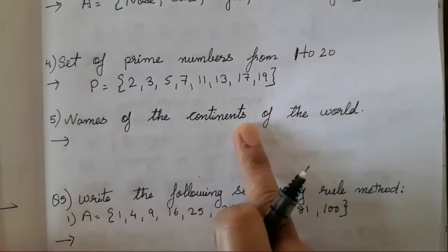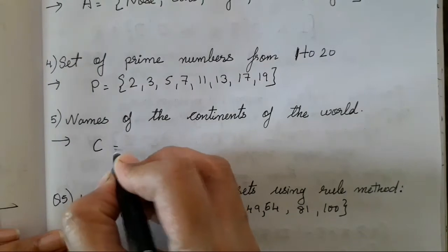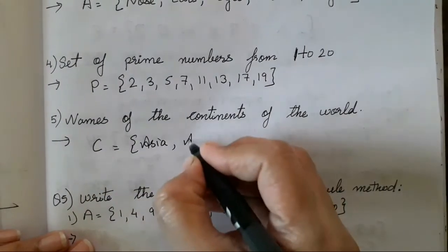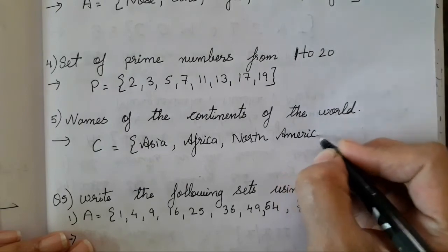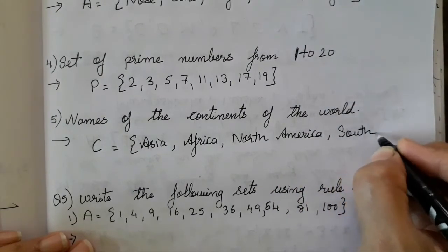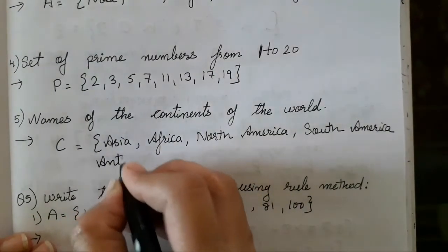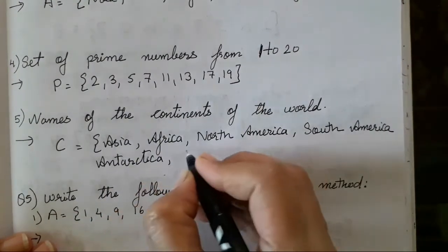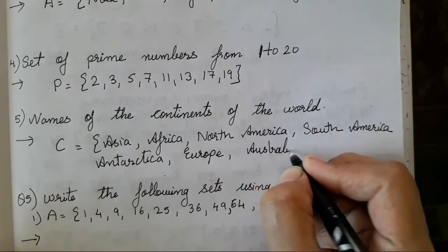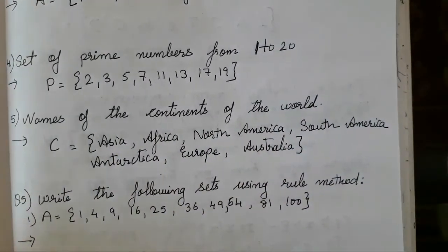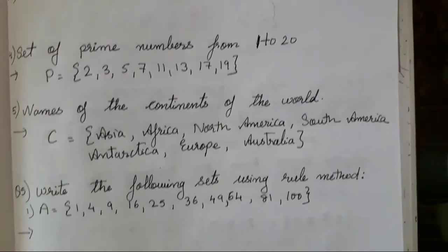Now, the next one is write the continents of the world. So all the continents you all have to write, you don't have to miss it. So continent, I will take C only. That is Asia, Africa, North America, South America, Antarctica. If you all don't know, you all can Google it. Or I have written it. You all can learn it, revise it. And Australia. So these are the continents of the world that I have written in the set form. I hope the set, how to write the set, it's easy to write it.